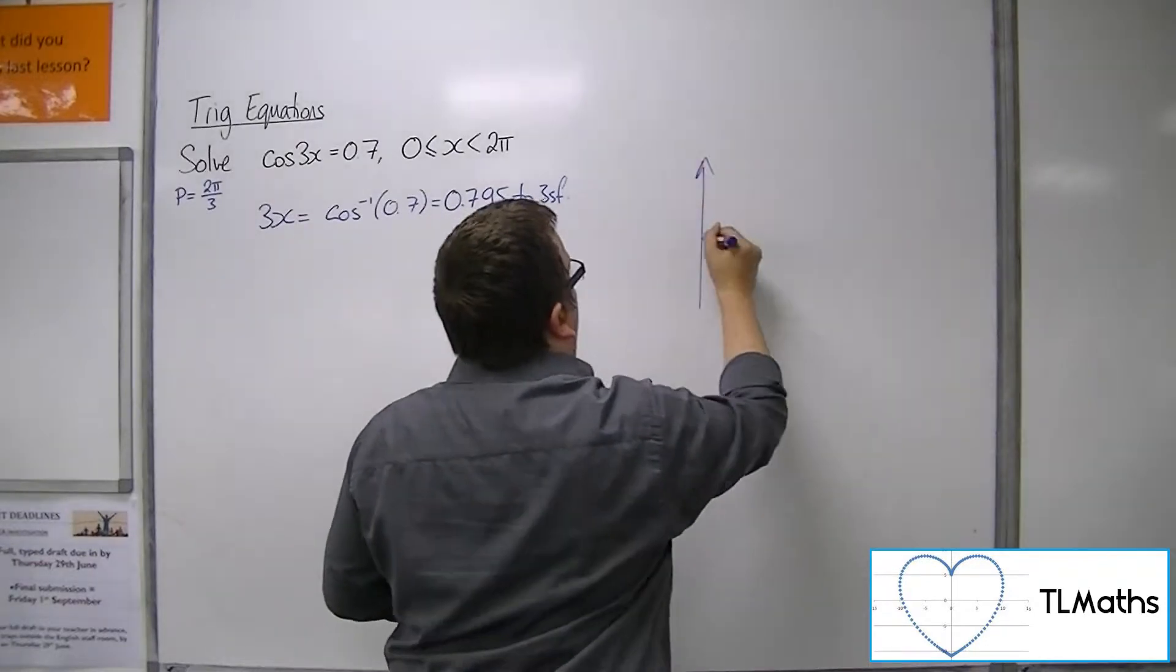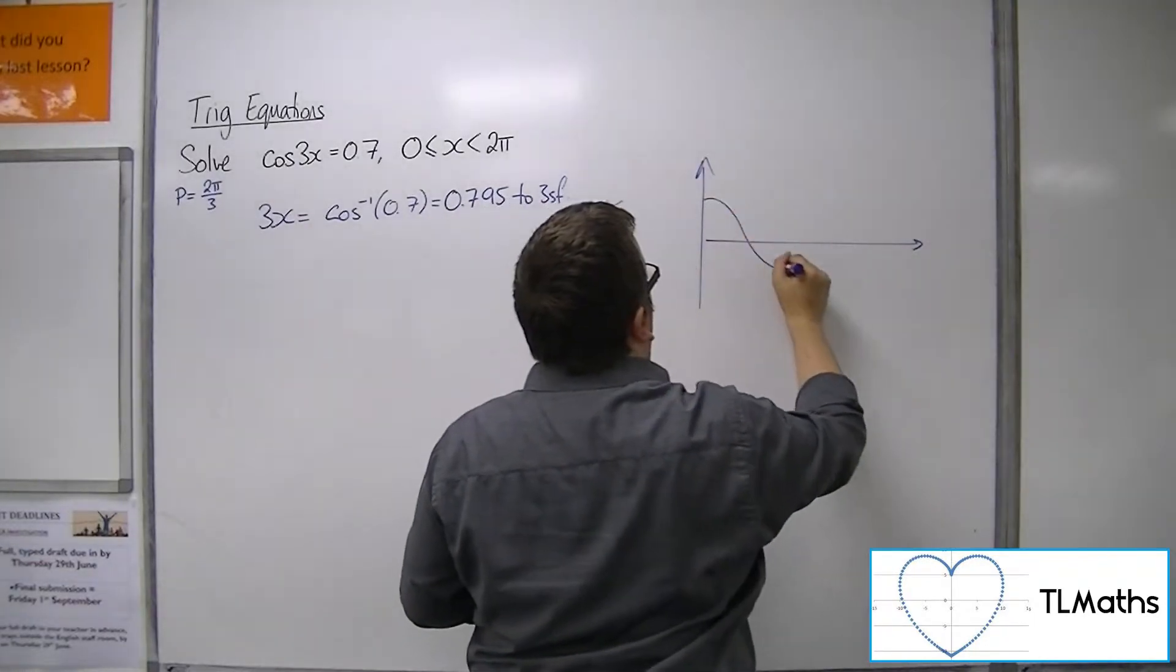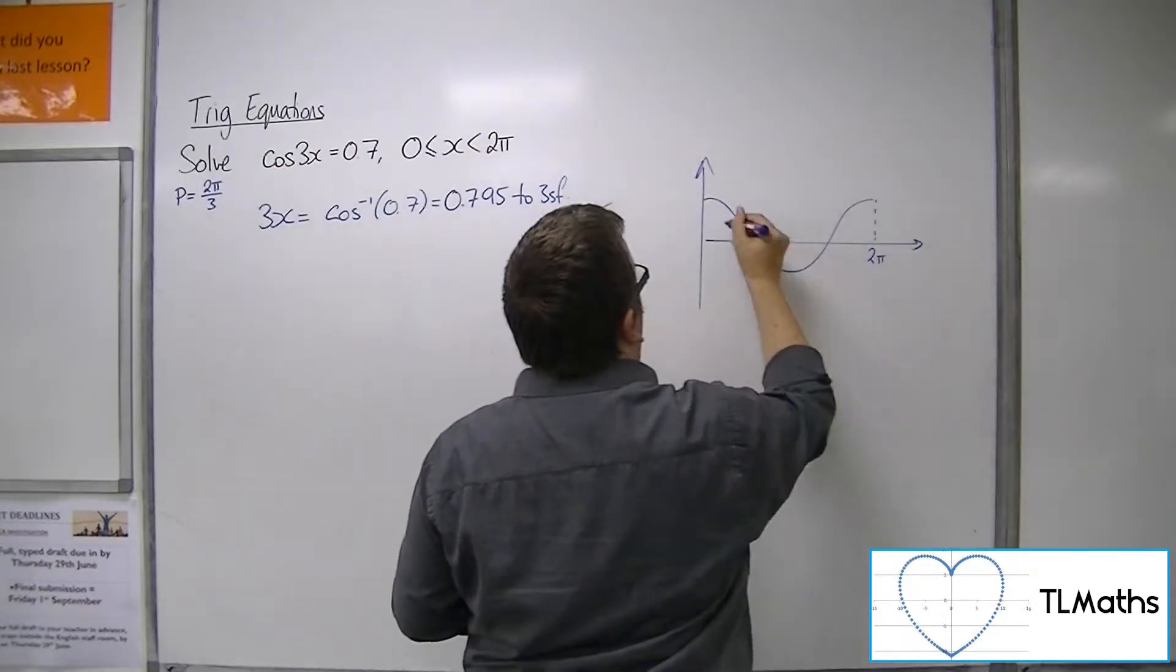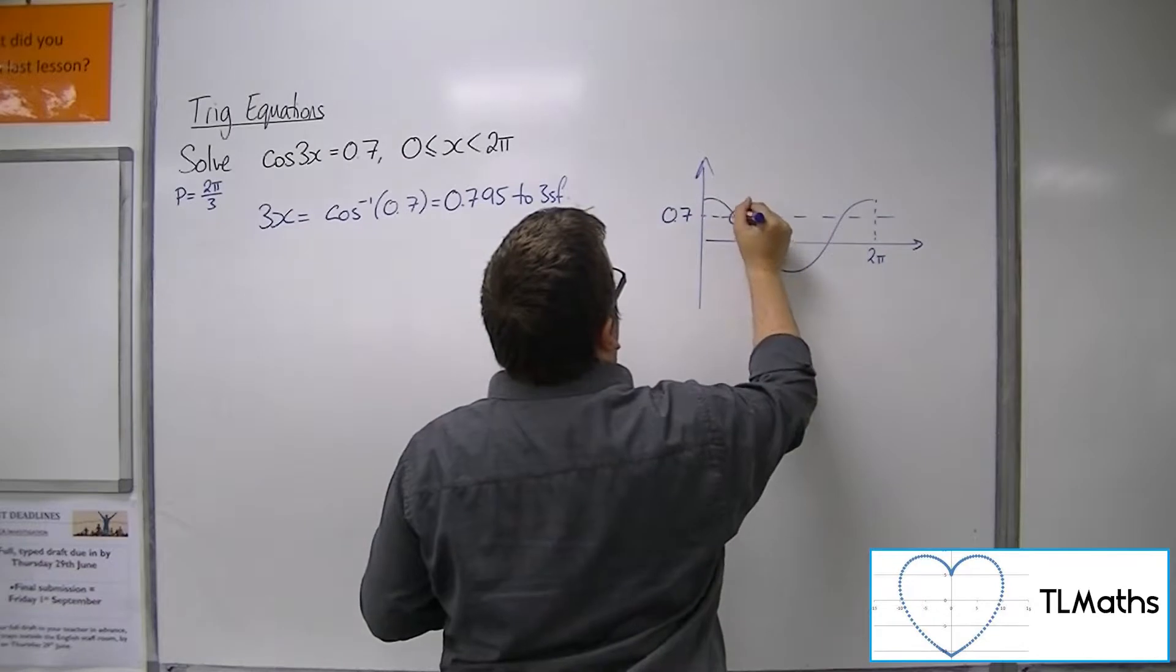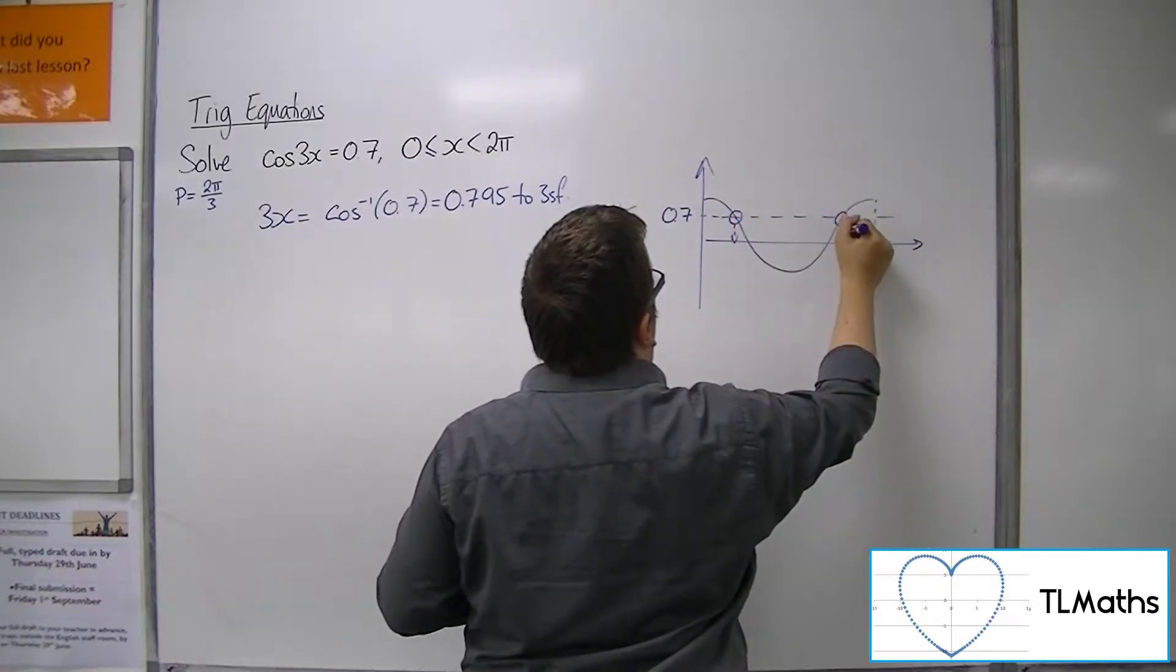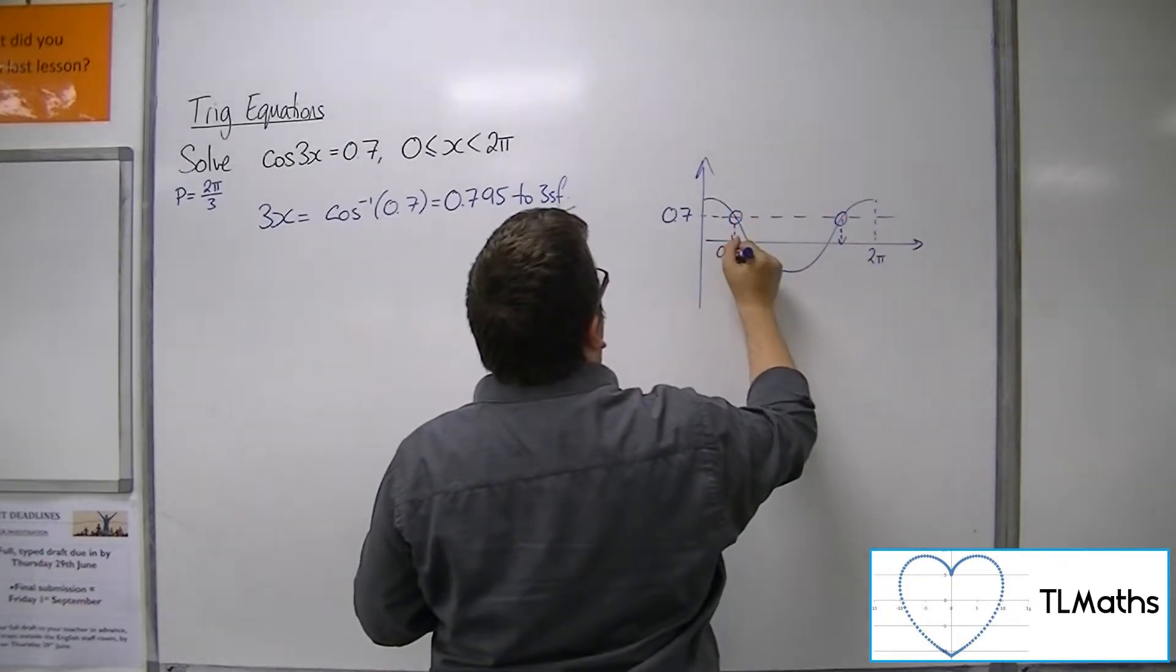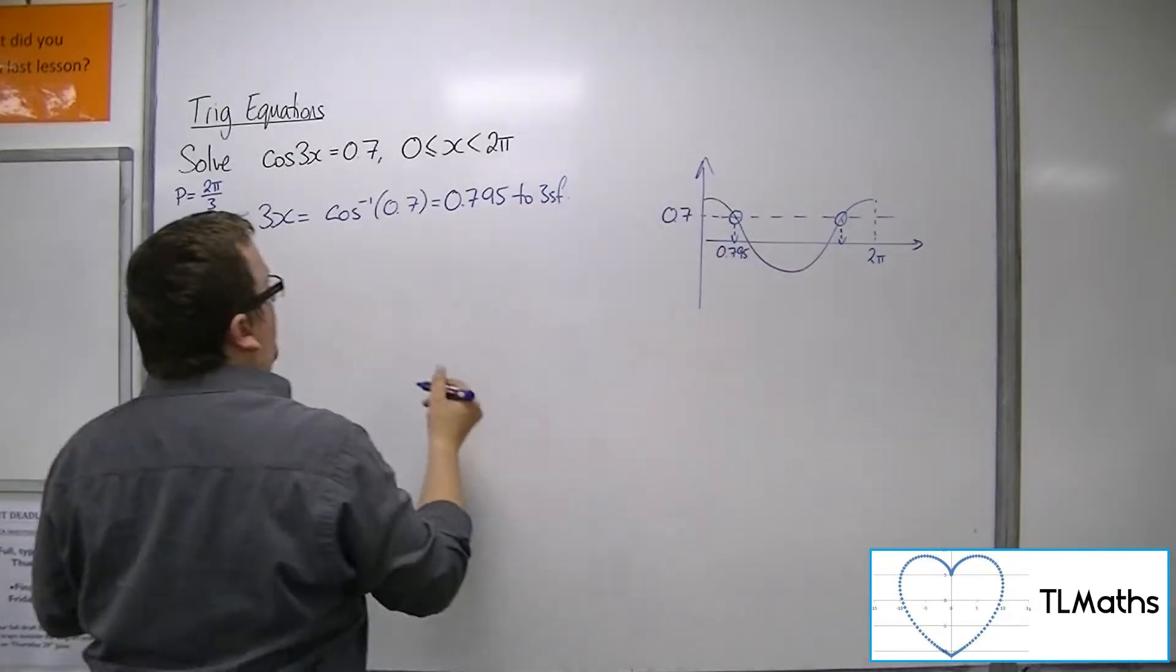Sketch cosine between 0 and 2π. The line y = 0.7 will intersect the curve at two points. The first one is 0.795.